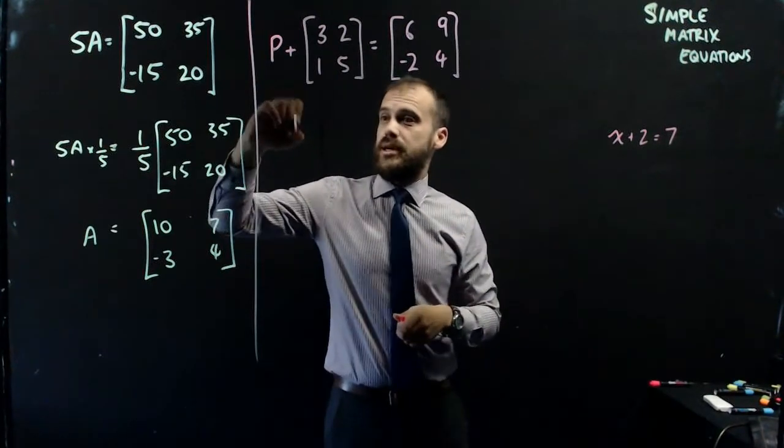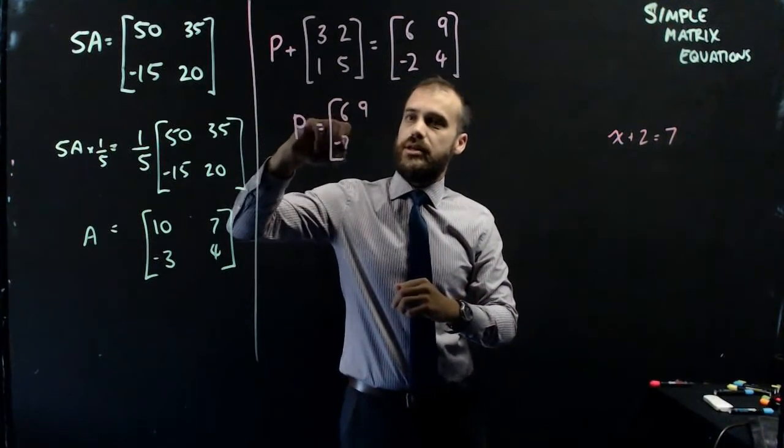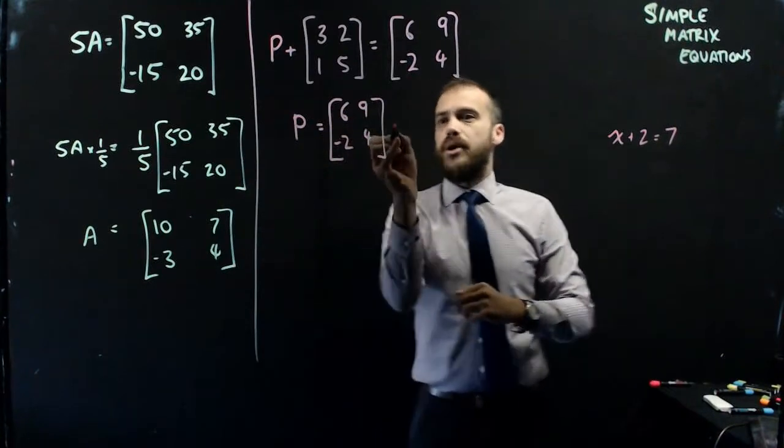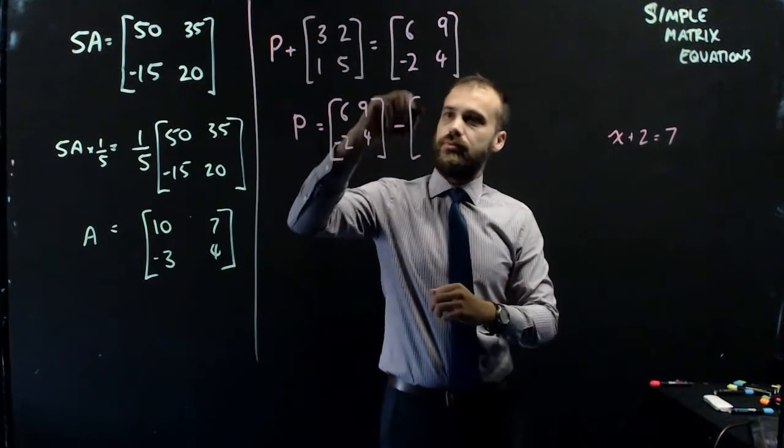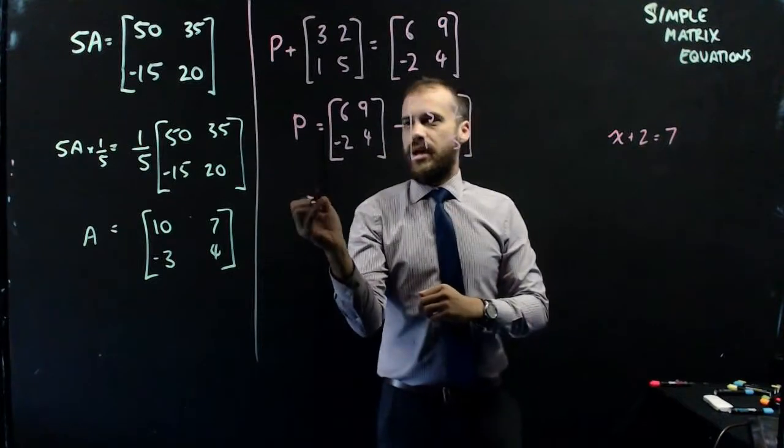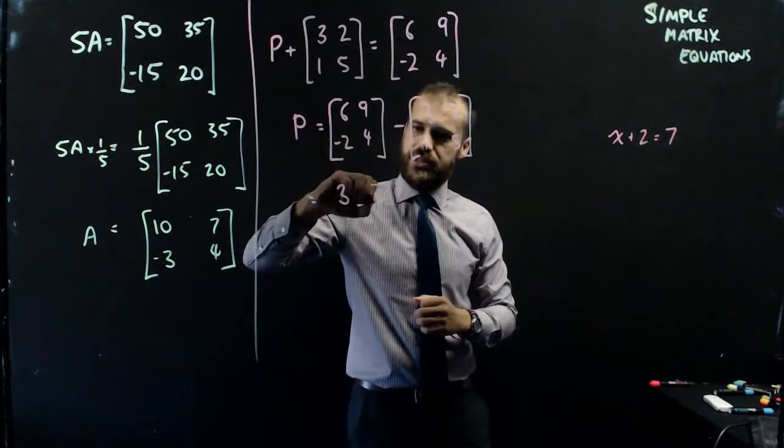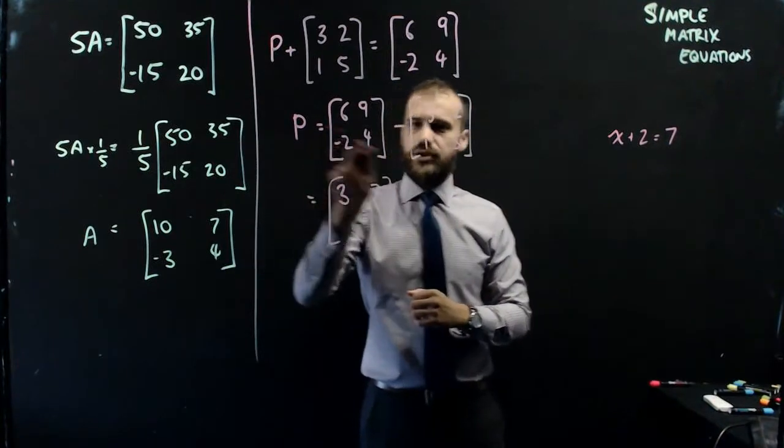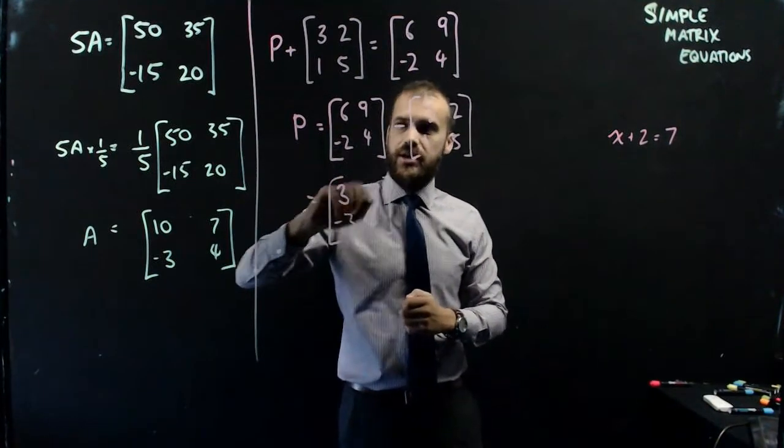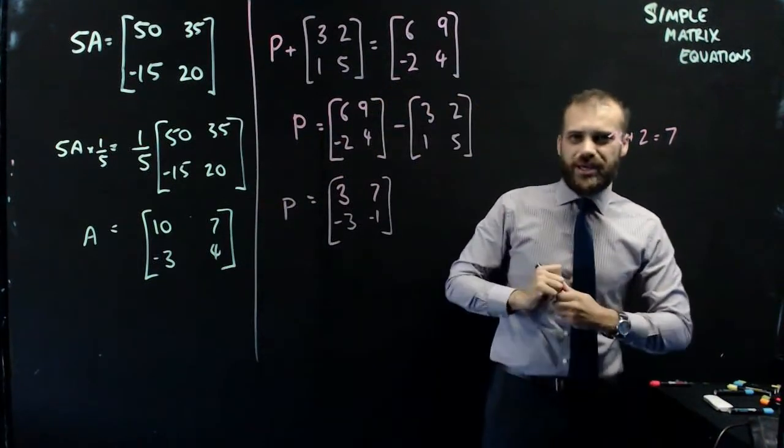So we're going to say P is equal to that matrix, 6, 9, negative 2, 4, minus that matrix. And then just element from element. 6 minus 3 is 3, 9 minus 2 is 7, negative 2 minus 1 is negative 3, and 4 minus 5 is negative 1. That is the value of P. Really simple matrix equations.